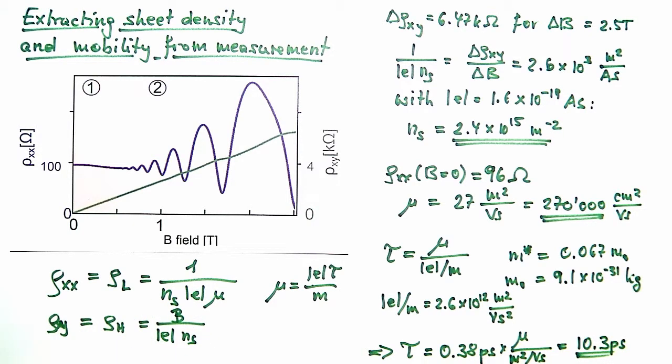My trick in working out the density is to say the field in Tesla at a point where the Hall resistivity reaches 6.25 kilo-ohms gives me the electron density in 10^15 meters.